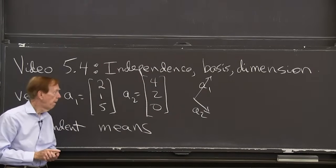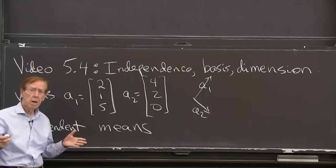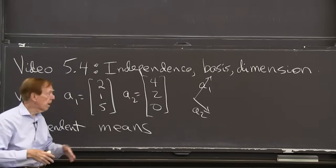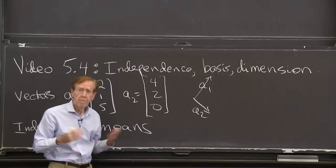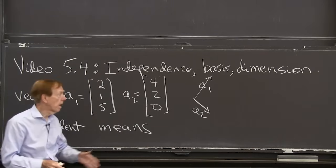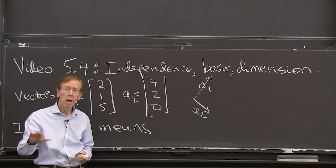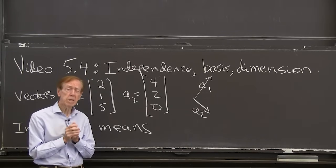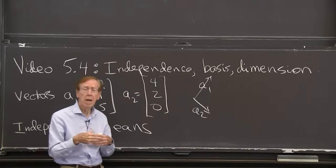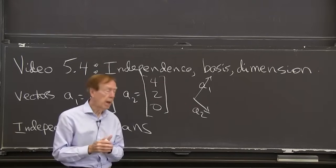So those are independent. Now, where does, so their combinations give me a space. Their combinations of a1 and a2 give me a plane, a flat plane, in three-dimensional space. That plane is, I would say, they span the plane.